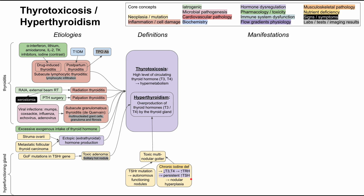Eventually, with the body continually signaling to produce more thyroid hormone, the thyroid begins making hormones autonomously, regardless of TRH or TSH signals. This results in nodular hyperplasia — a toxic multinodular goiter — and hyperthyroidism. Even if the patient corrects their historic iodine deficiency, they'll still have hyperthyroidism from the autonomous functioning nodular hyperplasia. Distinguishing features include that these are usually painless and you'll notice multiple palpable nodules on physical exam.